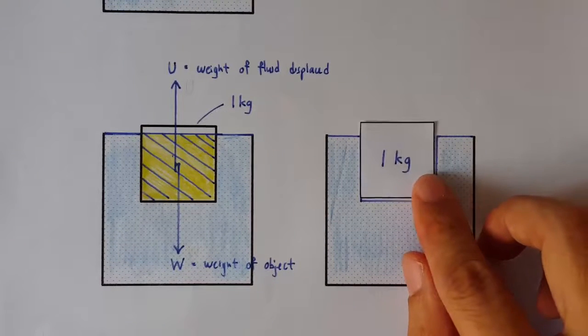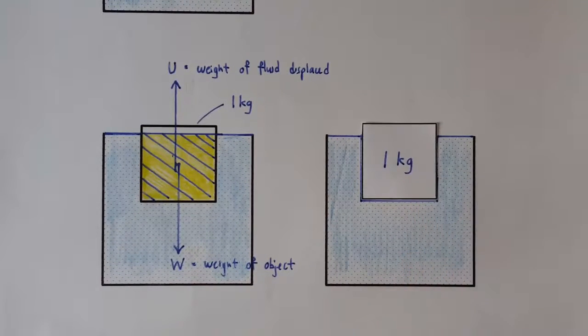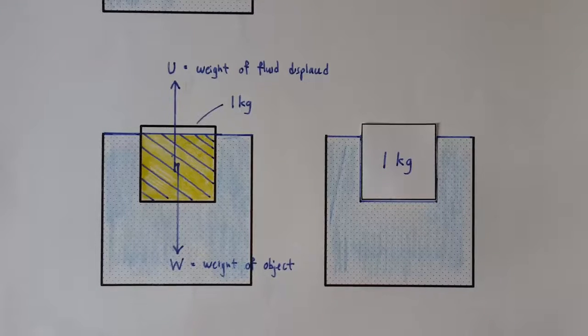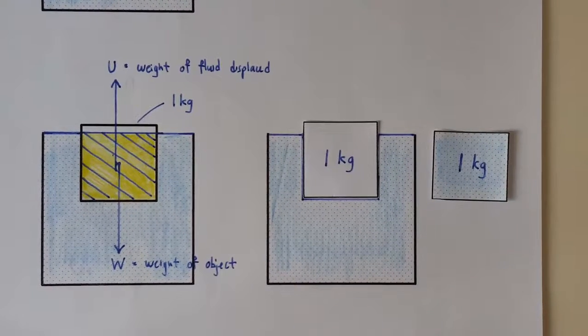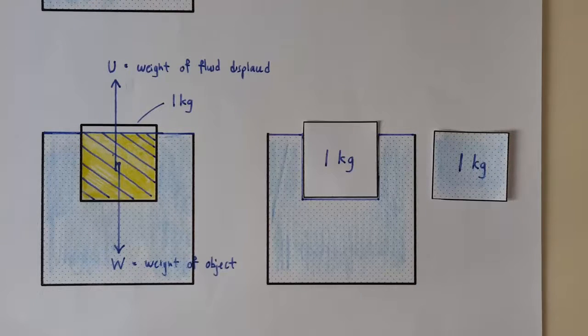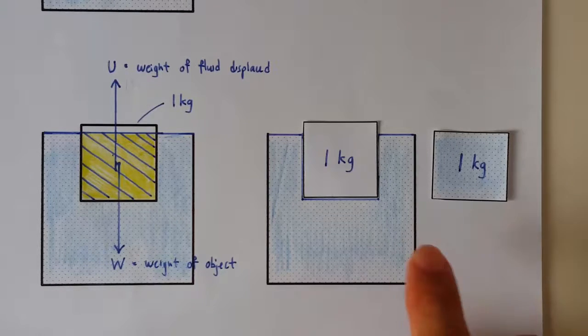So what we have here is the 1 kilogram ice cube. It's going to melt and become 1 kilogram of water. During melting, the mass doesn't change, right? We still have the same number of H2O molecules. It's just the intermolecular spacing that changes.